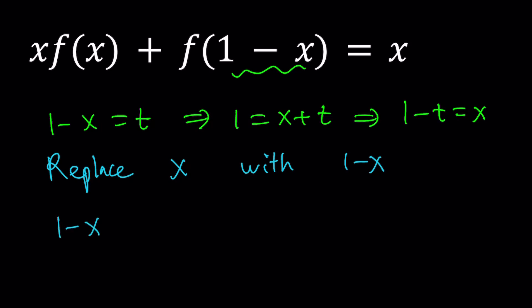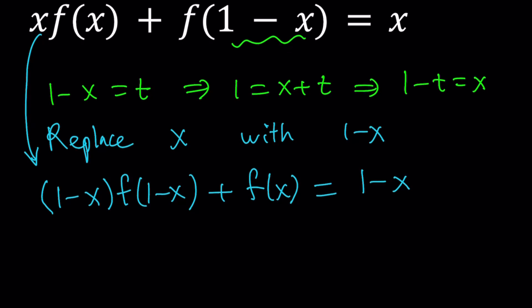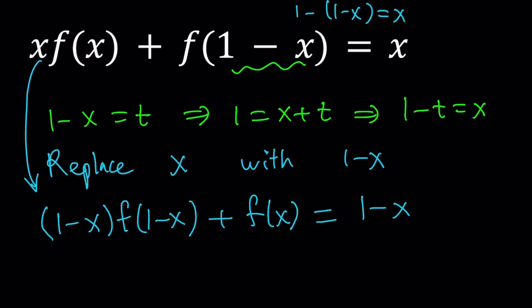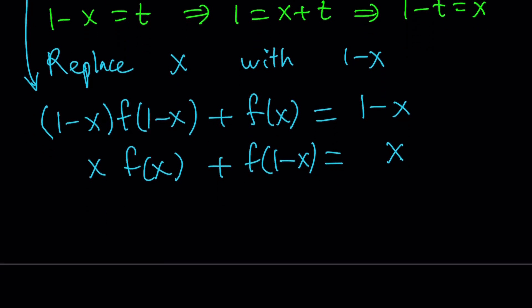Replace x with 1 minus x here. 1 minus x times f of 1 minus x plus f of 1 minus 1 minus x. You can test it out if you want, but you're going to get x from here. So this is going to give you f of x, which is cool. The right-hand side is just going to be 1 minus x. Now I got another equation. I have my original equation. So we got two equations, and that is a system of equations. Let's go ahead and rewrite the first one, trying to align the plus signs and the equal signs, and we get the following system.